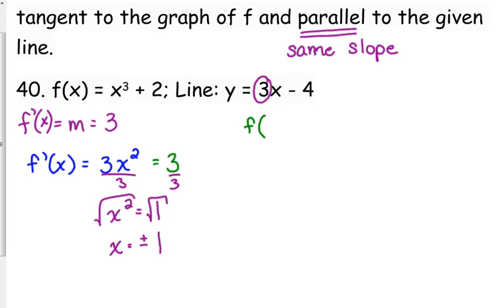So let's plug in negative 1 and positive 1 into our original function to get their y-coordinates. If we plug in into the derivative, we're going to get the slope back. Negative 1 cubed is negative 1, so negative 1 plus 2 is positive 1. Positive 1 cubed is positive 1, positive 1 plus 2 is 3.